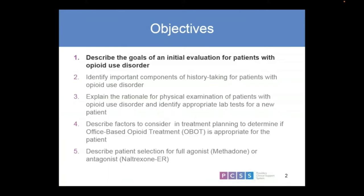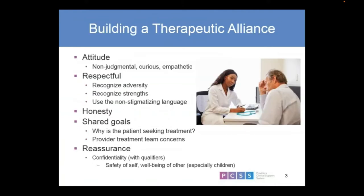Describing factors to consider in treatment planning to determine if someone is appropriate for office-based opioid treatment. And also, lastly, describing patient selection for full agonists — i.e., methadone — or antagonist, i.e., naltrexone therapies.